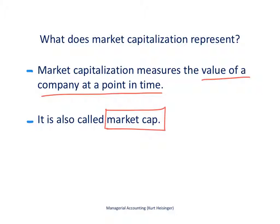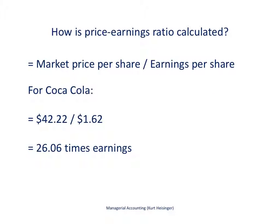So when you hear somebody talking about the market cap of a company, they are simply talking about the overall market value of the company if you or I were to go buy all of the shares of stock outstanding in that company at that point in time. Next we'll take a look at the price earnings ratio, or what's often called the PE ratio. The PE ratio is found by taking the market price per share and dividing that by the earnings per share.